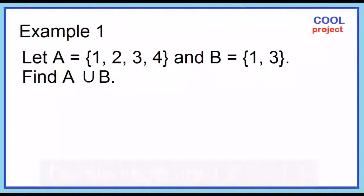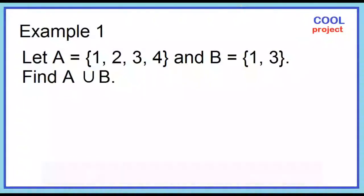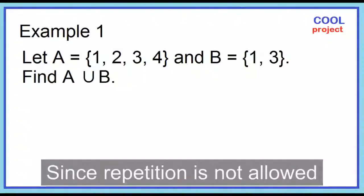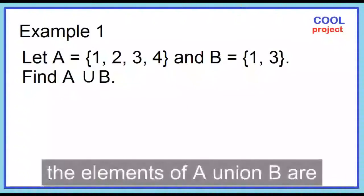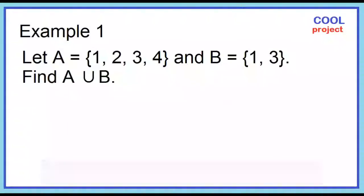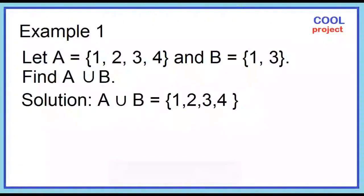The elements are 1, 2, 3, 4, 1, 3. Since repetition is not allowed, the elements of A union B are 1, 2, 3, and 4.